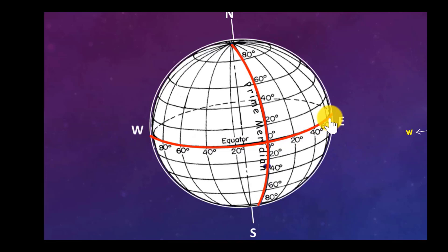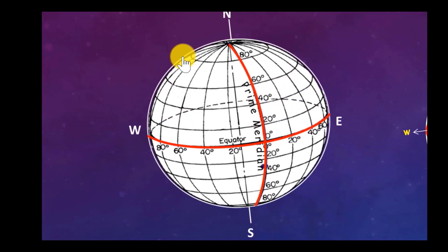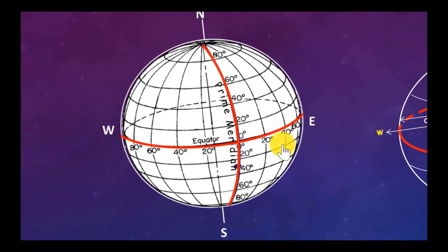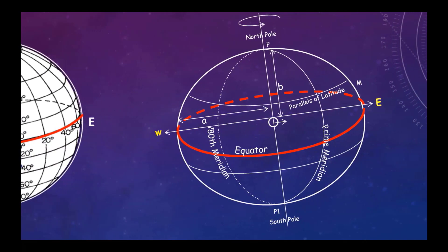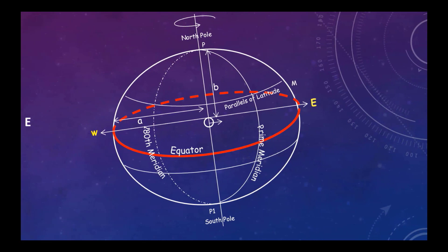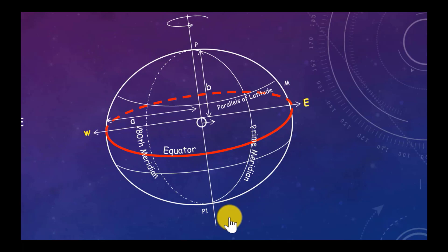The equator is the imaginary line which divides the Earth into two equal parts. Above the equator there are lines parallel to it, called parallels of latitude, and below there are also parallels of latitude. The axis is the line about which the Earth rotates, and the extremities of the axis are called the poles — the North and South Pole.